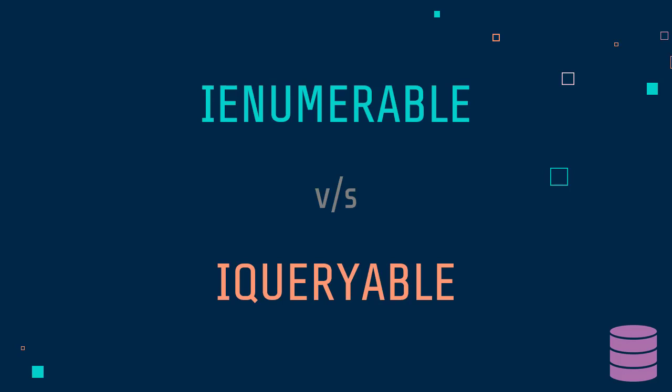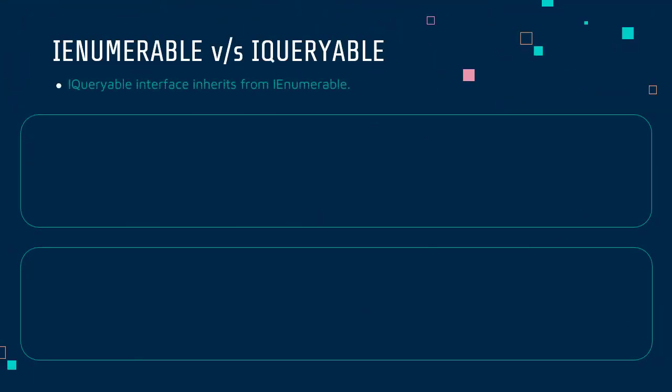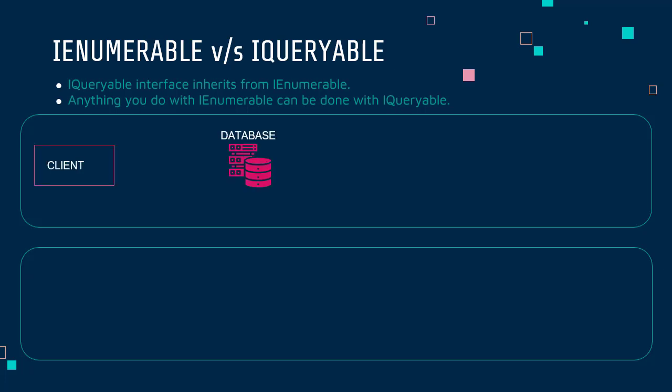Now let's get back to the big question: what is the difference between IEnumerable and IQueryable? IQueryable extends the IEnumerable interface, so anything that you do with IEnumerable can also be done with IQueryable. On top of that, there is one big difference that is directly related to the performance of your application. Let me explain that with an example.